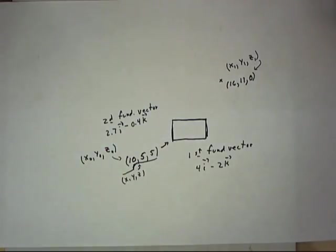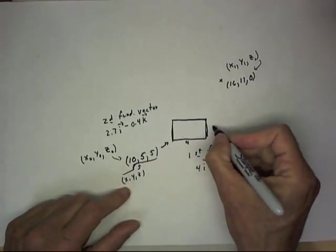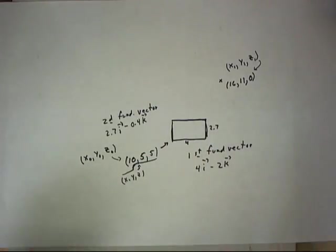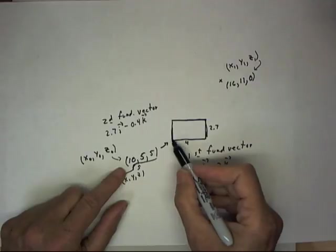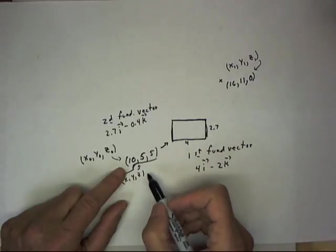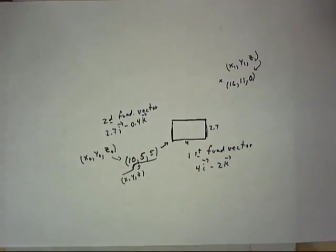I've written down all the relevant information here. I haven't noted that this is four and this is two point seven, but we kind of remember that from before. Now, the coordinates of the point that lie above this point are ten, five, and five. The coordinates of this point are sixteen, eleven, and zero.